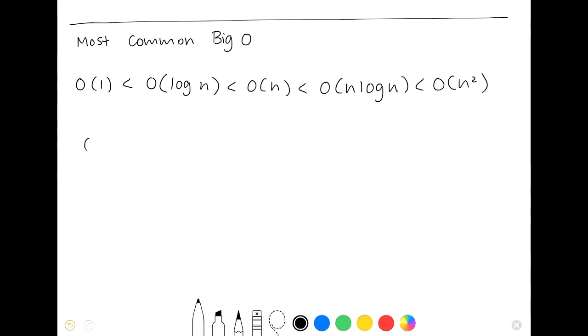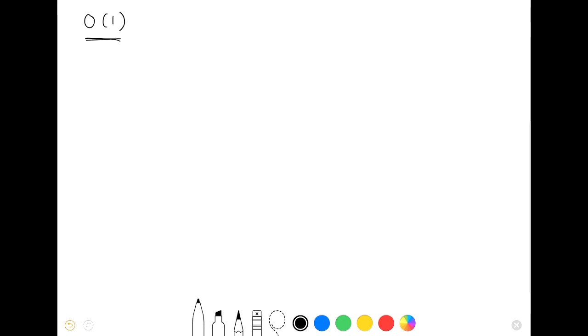Let's start with O of 1, which is constant time. This means that no matter how large or small n is, the code will always run for the same amount of time. An example being simple math or a loop. Notice how n is not referenced in this loop at all. Thus, no matter what the input n is, the loop will always run 100 times, which we call constant time, O of 1.